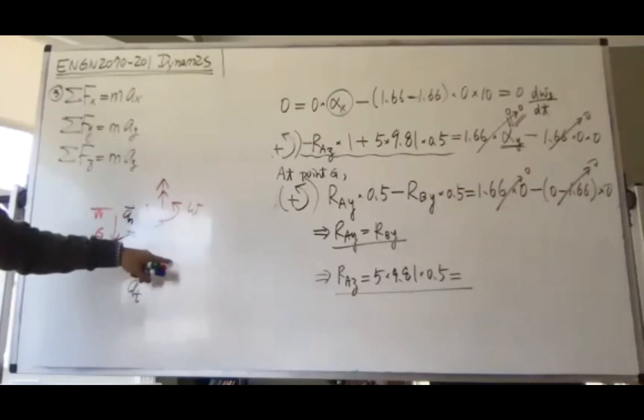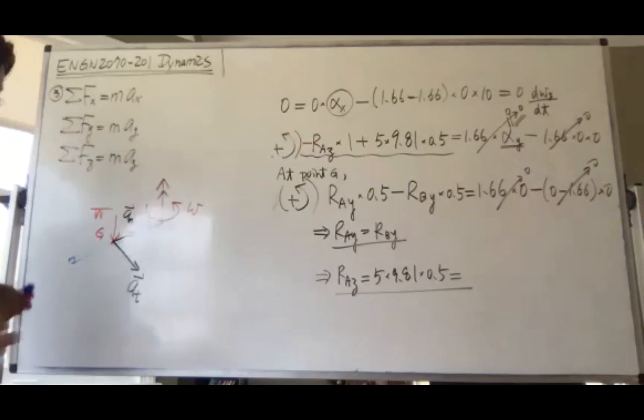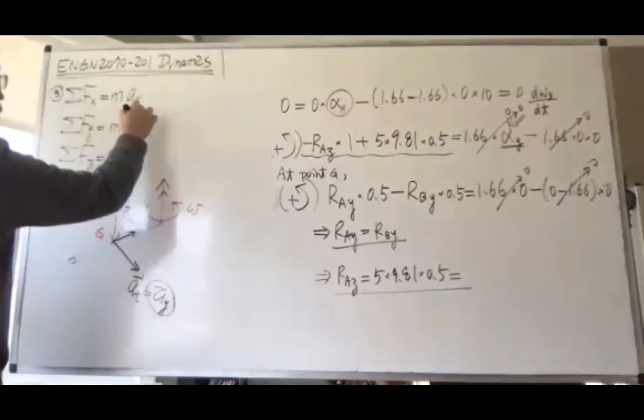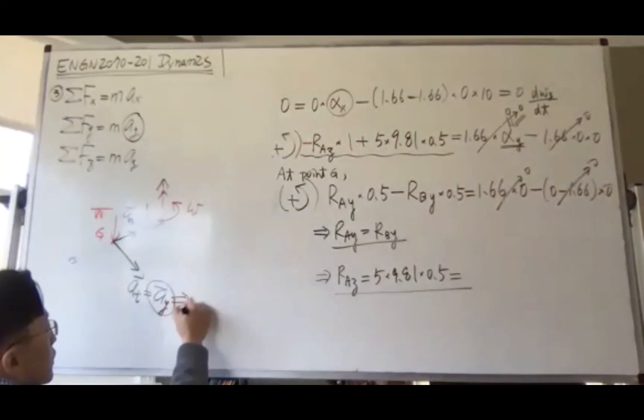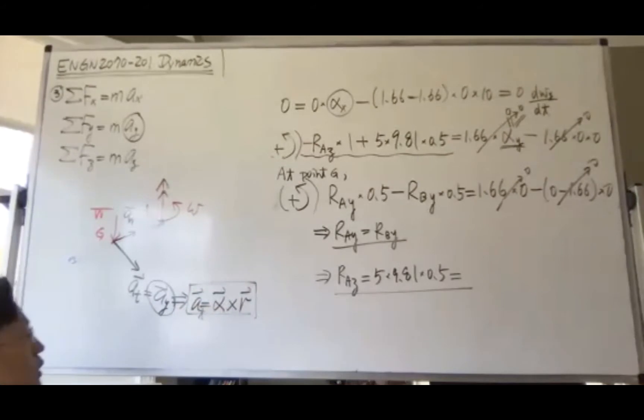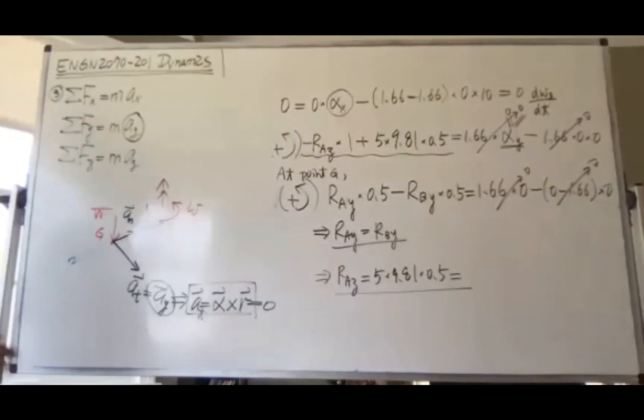When you project these two directions to our xyz coordinates, a_t is in the y-direction at this moment. The tangential component a_t equals a_y. How do you find this value? The tangential component is alpha cross r—angular acceleration cross the distance. There's no angular acceleration here, so this is zero.